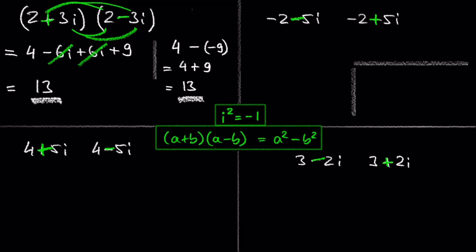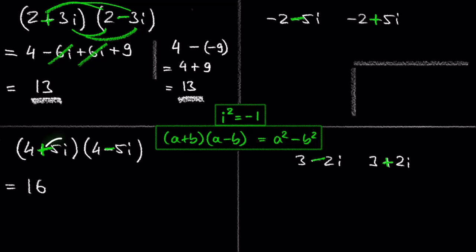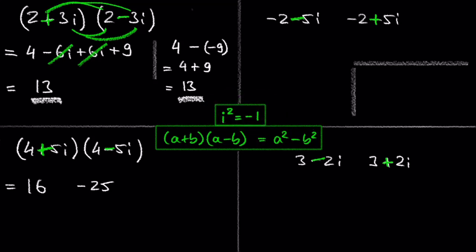Let's try the next example. The formula says square the first term, which is 16, and square the second term, which is negative 25, and put a negative sign in between. So 16 minus negative 25 is 41, and we are done with this problem.